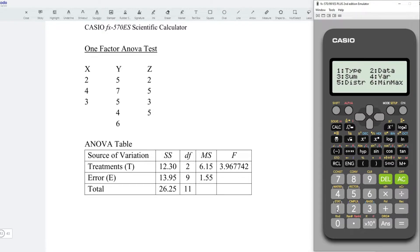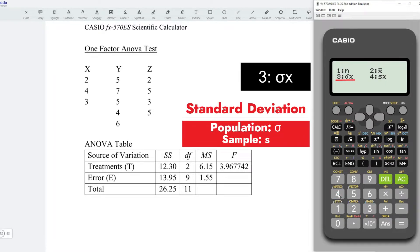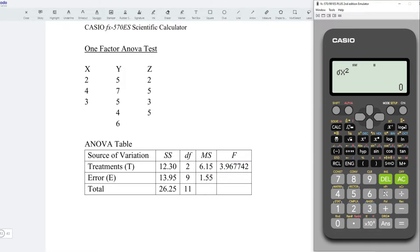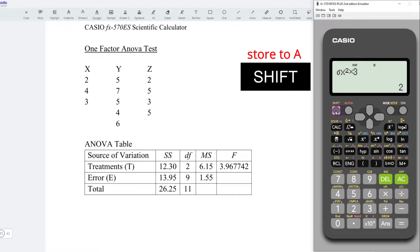Next, shift 1, and look for variation 4. We need population standard deviation, that is 3. Take square to get variance, and all together we have 3 observations. So let's times 3. Press on equal. Let's store this value. Press on shift, recall, and store to A.